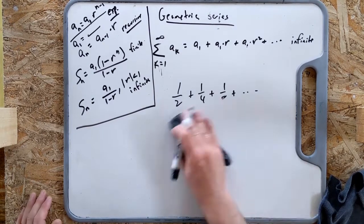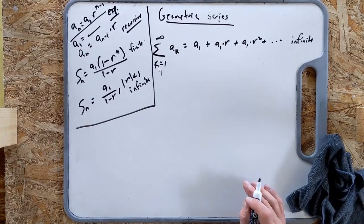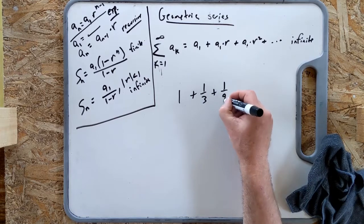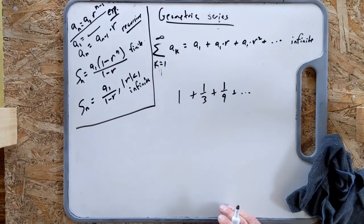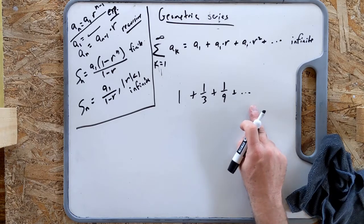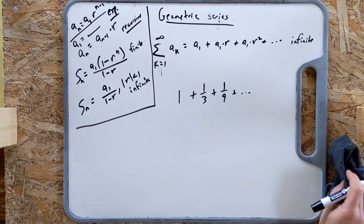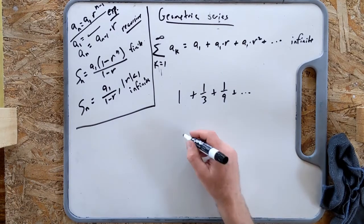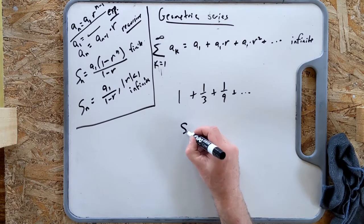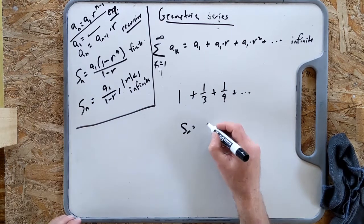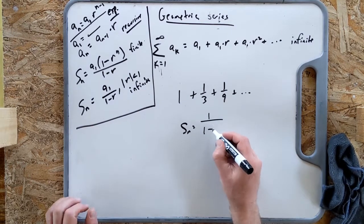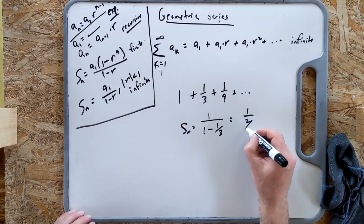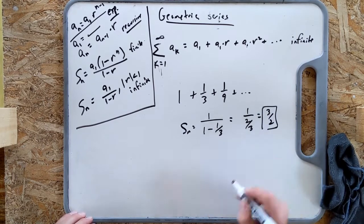Another example: 1 plus one-third plus one-ninth plus dot dot dot, going on forever. Again, it's getting smaller, r is less than 1, so it should converge. Using the formula: a_1 is 1, r is one-third. S equals 1 over (1 minus one-third), which is 1 over two-thirds, or three-halves.